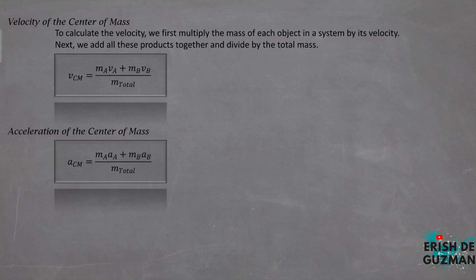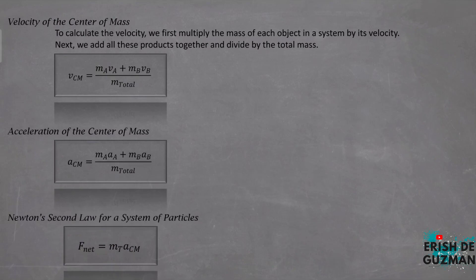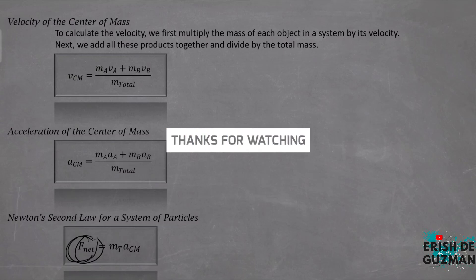Newton's second law can be applied to a system of objects or particles. The equation is: net force = total mass × acceleration of the center of mass. The net force may include both external and internal forces. However, because internal forces come as action-reaction pairs with equal magnitudes and opposite directions, they cancel out. Therefore, the second law for a system of masses may be written using only the net external forces: F_net(external) = M_total × a_cm.